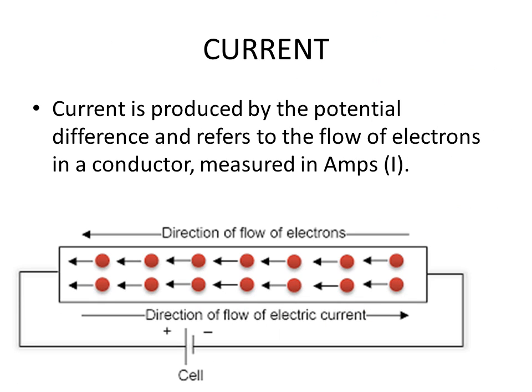What about current? Current is produced by the potential difference and refers to the flow of electrons in a conductor, measured in Amps, indicated by I.